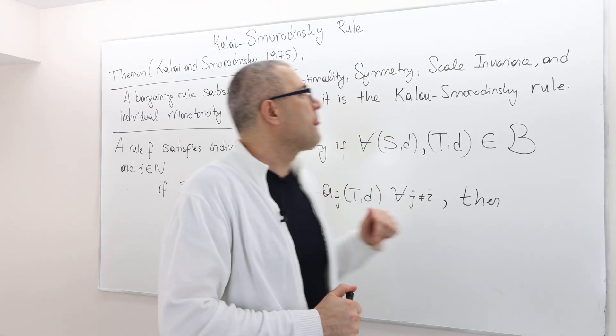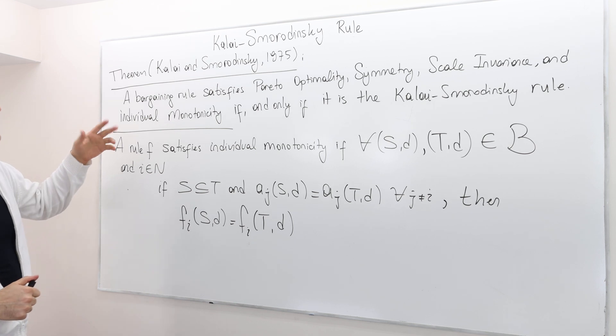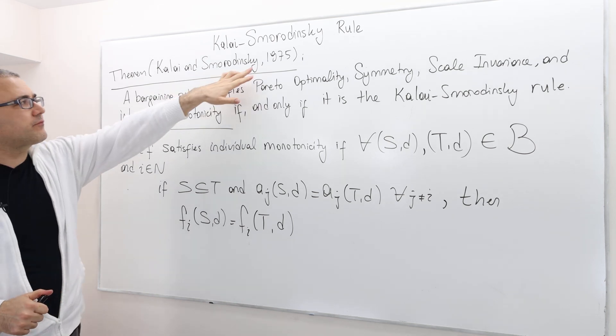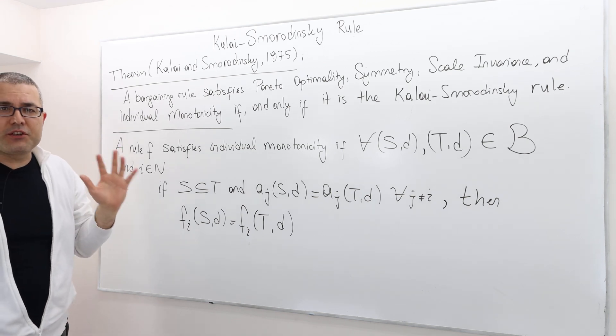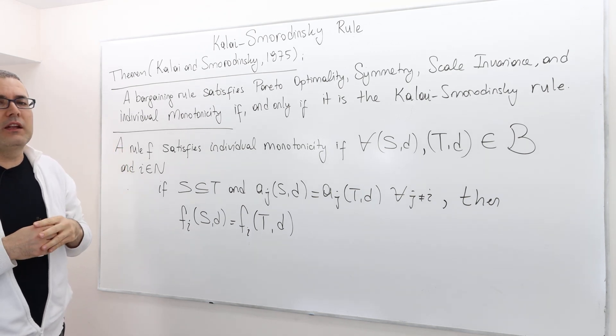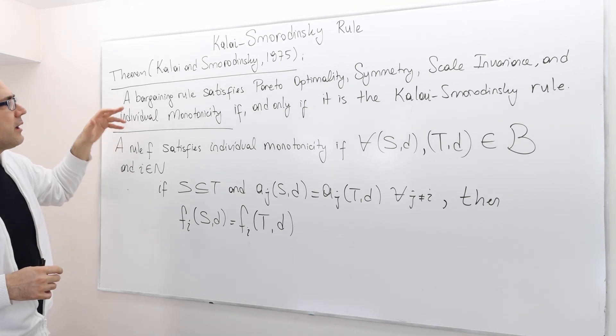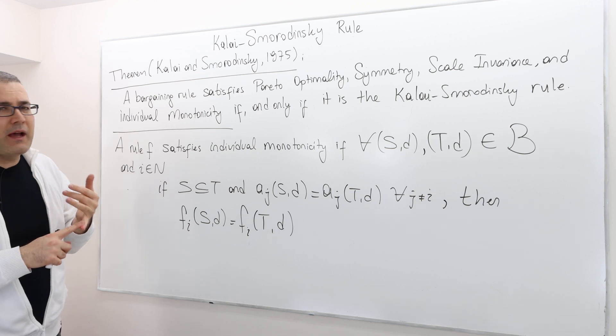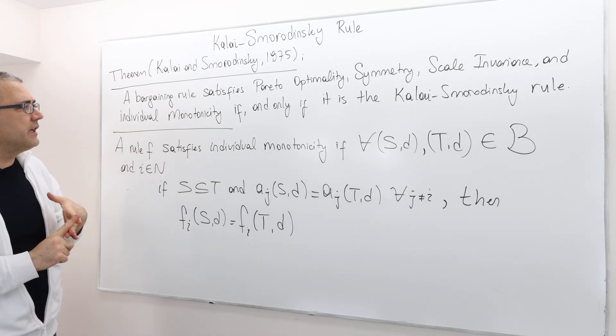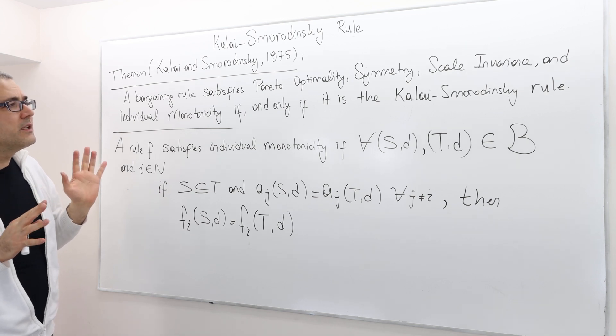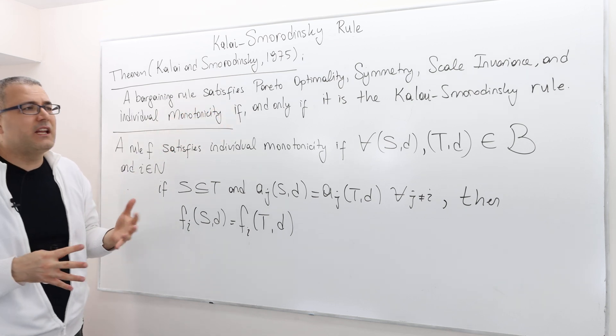Okay guys, so here is the Kalai-Smorodinsky theorem. It's basically from their 1975 paper. It's a characterization theorem like the Nash's theorem we spoke about earlier. A bargaining rule satisfying Pareto optimality, symmetry, scale invariance, and individual monotonicity has to be the Kalai-Smorodinsky rule.